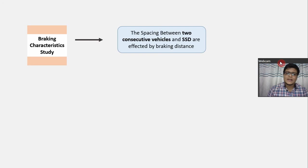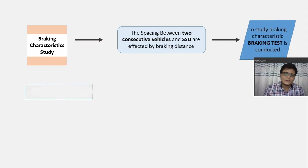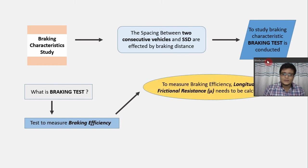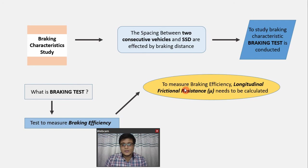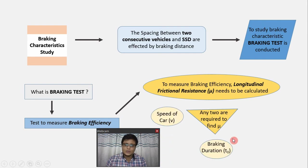The braking characteristics will determine the braking efficiency by performing a braking test. The braking test is the test to determine the braking efficiency. You can find the braking efficiency by measuring the longitudinal frictional resistance. To measure the longitudinal frictional resistance, we need any two quantities out of these three: speed of the car, braking duration, and braking length.